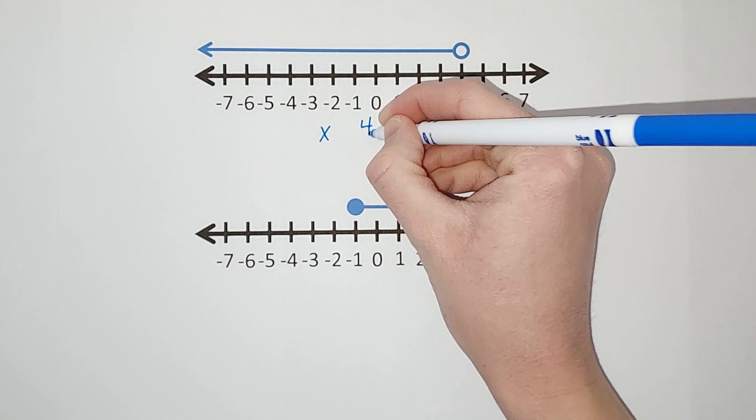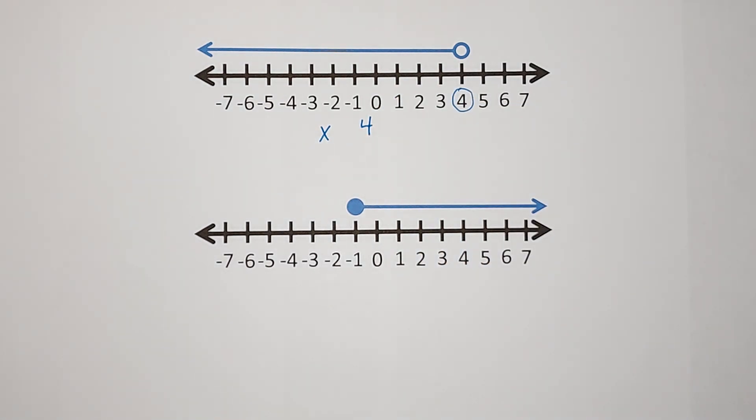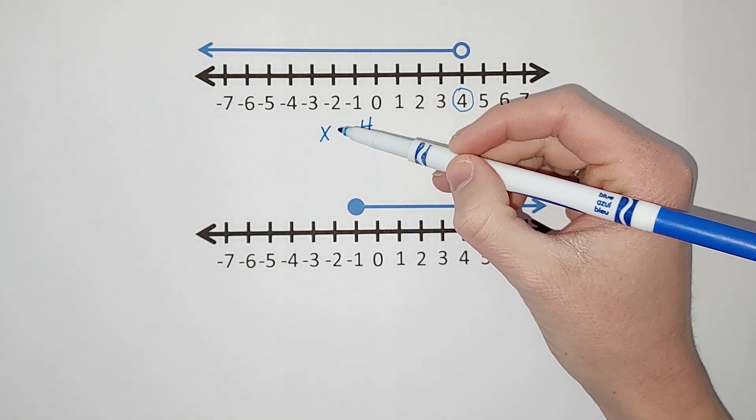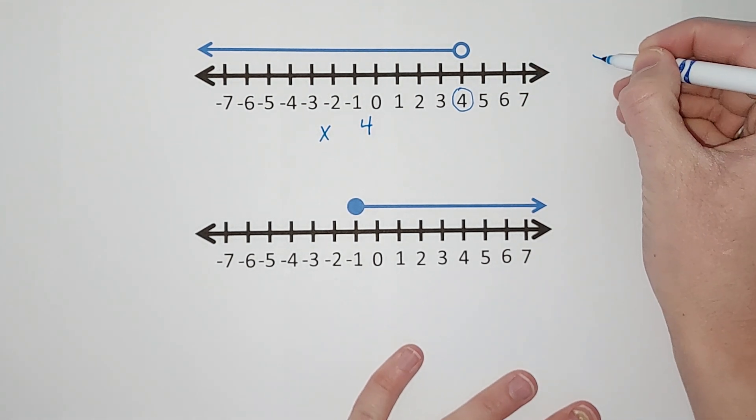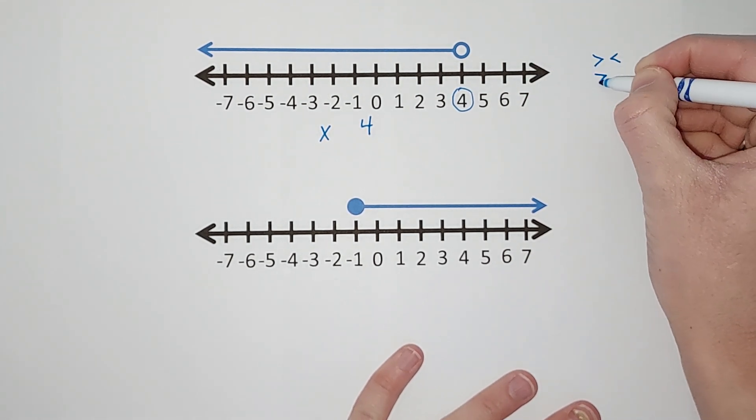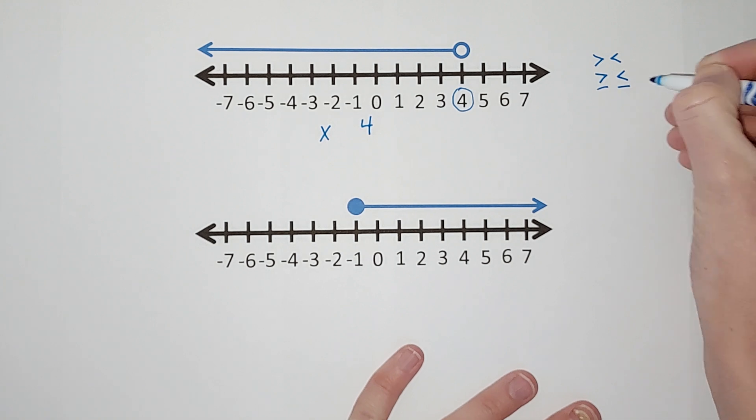So we know we have x and 4, and then we just need to figure out what variable goes here, right. And it could be greater than, it could be less than, it could be greater than or equal to, it could be less than or equal to.